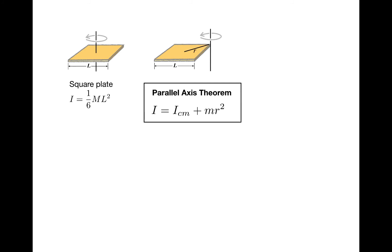For this plate, we know that I about the center of mass is one-sixth ml squared, where l is the side length of the square. r, in this case, is half the length of the diagonal, which is root 2 over 2 times l. So making substitutions into the parallel axis theorem,